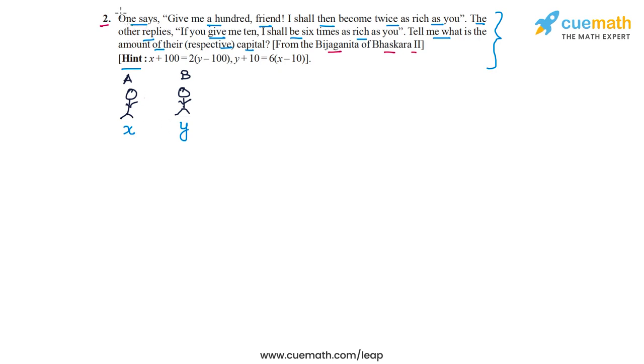The first part of the problem statement is when the first friend is saying, give me a hundred and I shall become twice as rich as you. So A is saying, give me a hundred rupees from your capital and I will become twice as rich as you. So what will the situation look like? In that case, A's capital will increase by hundred, so it will become X plus hundred. But B's capital will go down to Y minus hundred. And in this situation, A's capital will be twice of B's capital.